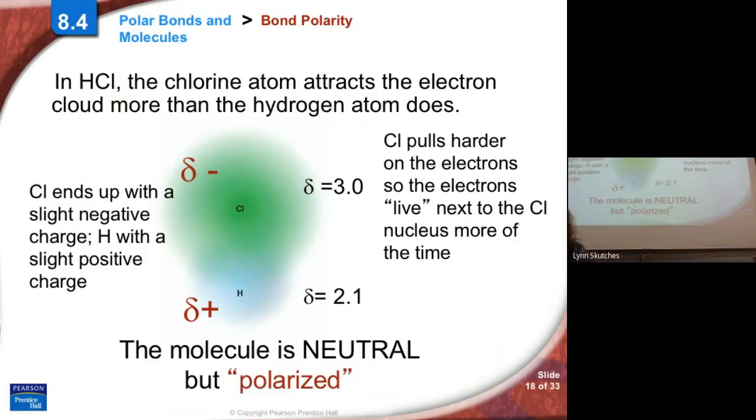But another thing, and we'll talk about this on Thursday, is these will also cause these molecules to orient a certain way. Would the two negatives go together? Would the two positives go together? They're going to line up and organize so that positive is next to negative, okay? And that's another discussion. I kind of jumped in my pants here. But this is considered a polar molecule because one side is kind of positive and one side's kind of negative. Overall charge is still zero, but the electrons live next to the chlorine more of the time.